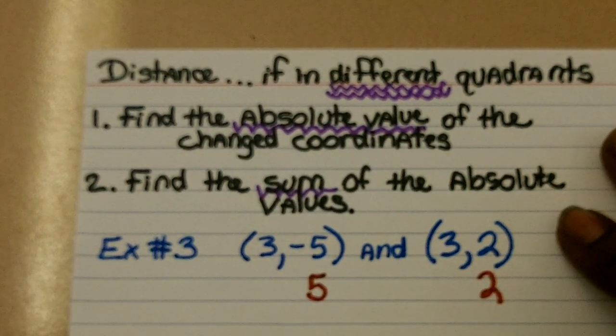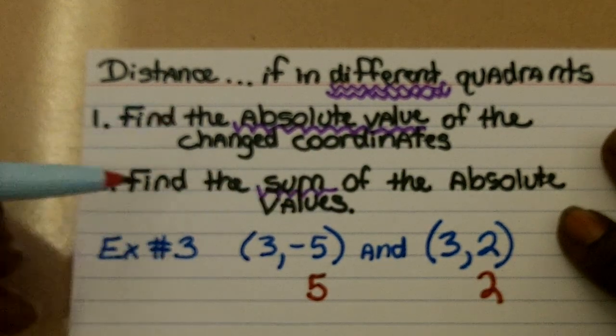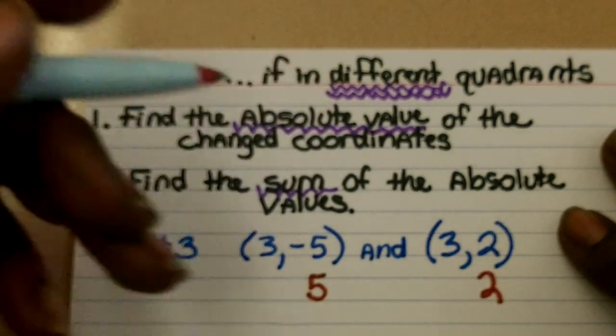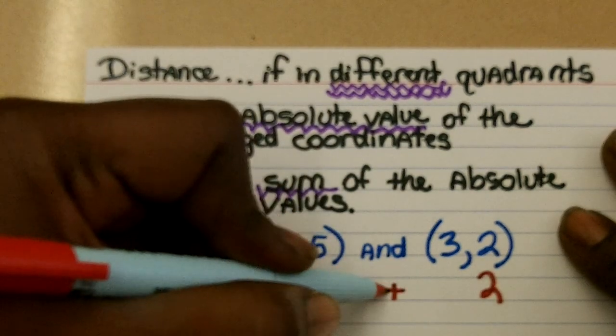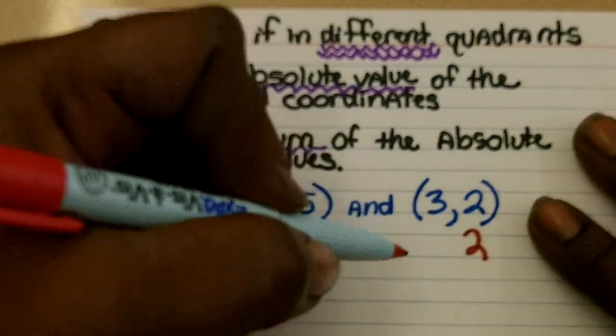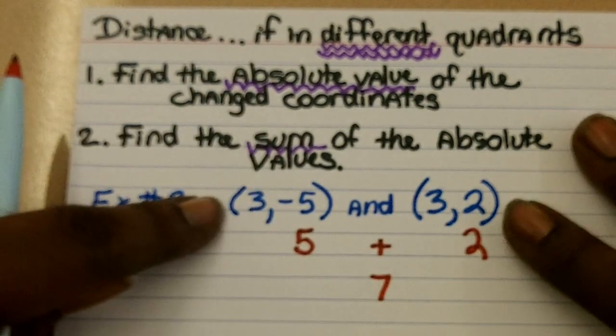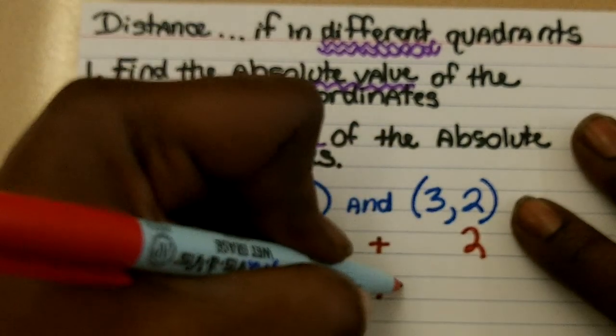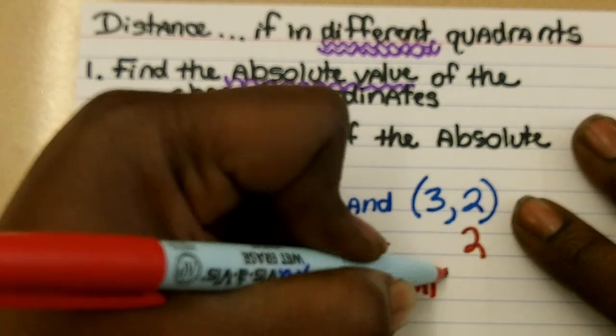Step two is to then find the sum of these absolute values. Since they are in different quadrants, you will add the absolute values. 5 plus 2 is 7. Therefore, the line that passes between these two ordered pairs is 7 units long.